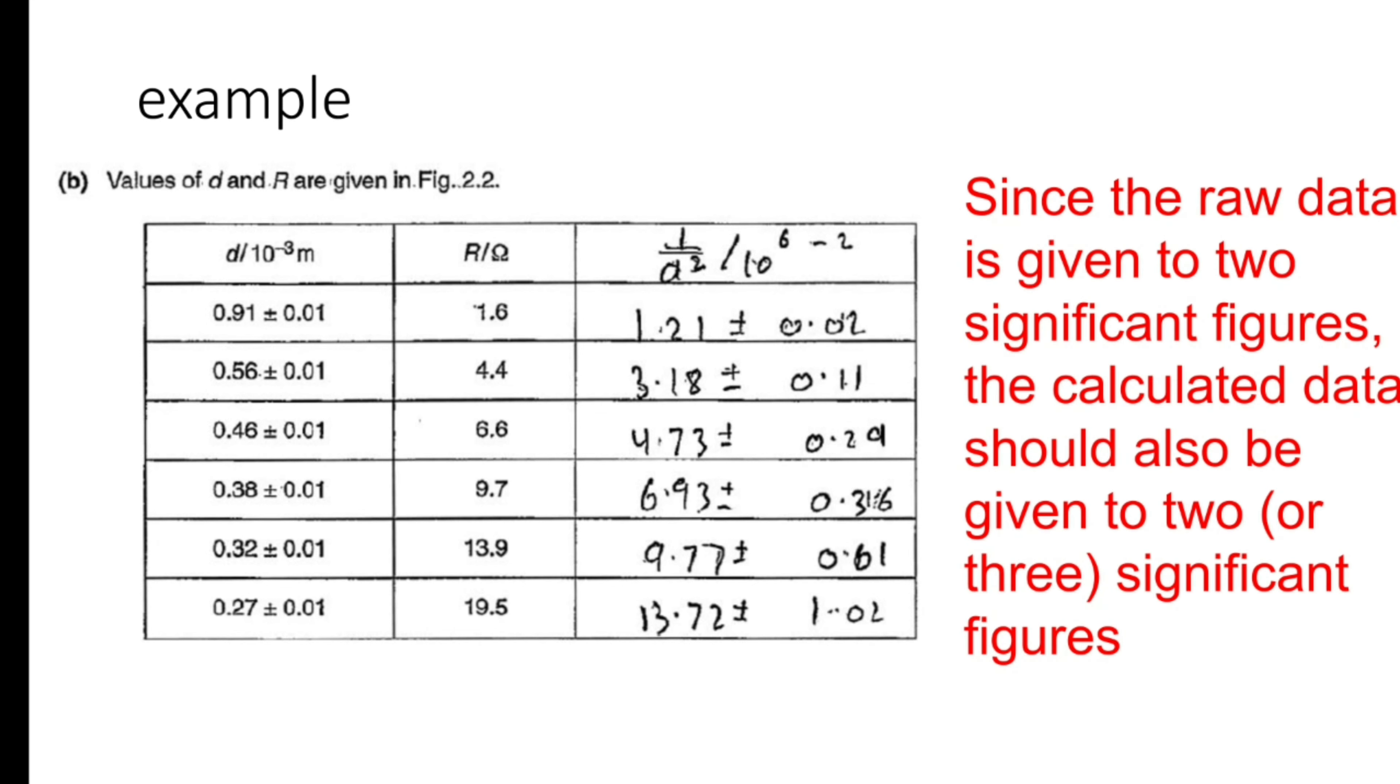Since the raw data is given 2 SF, the calculated data should also be 2 or maximum 3. It should not go 4. Another thing is this is diameter, so diameter cannot be this much.